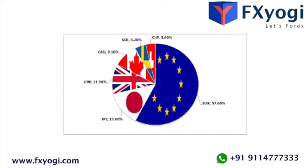The US Dollar Index currency basket consists of six foreign currencies: the euro, the Japanese yen, the British pound, the Canadian dollar, the Swedish krona, and the Swiss franc.